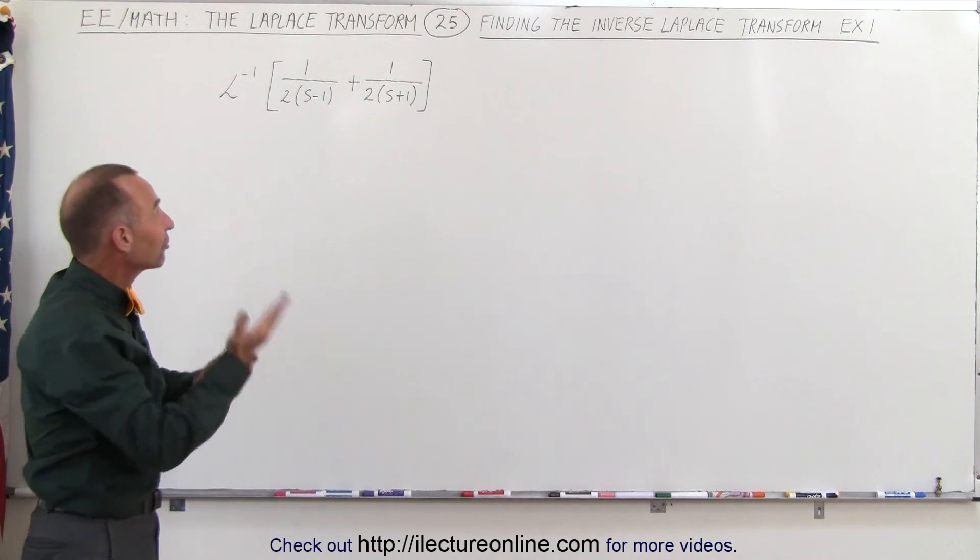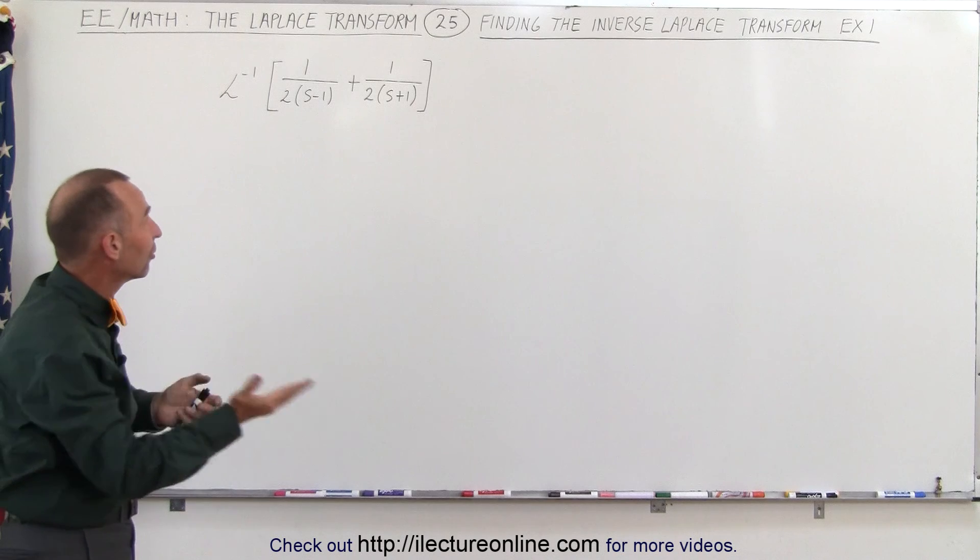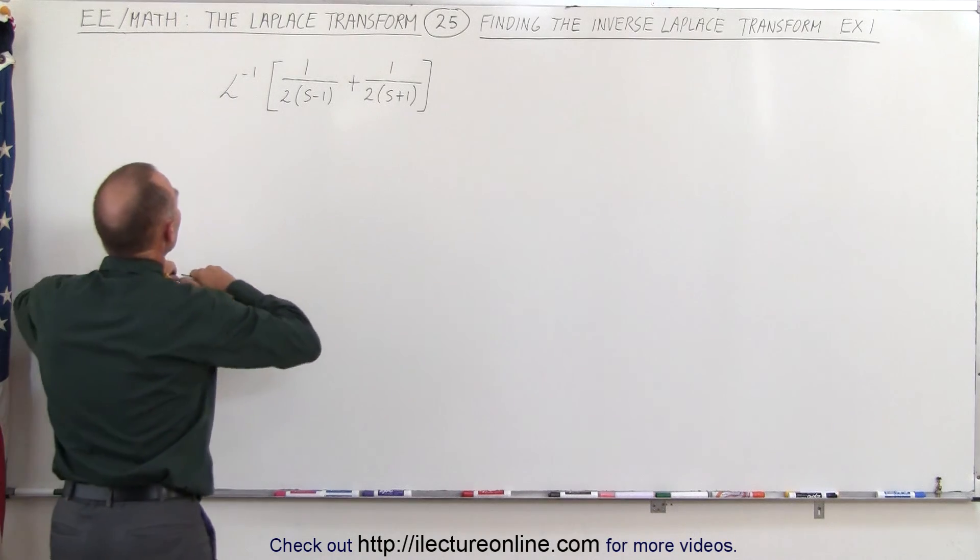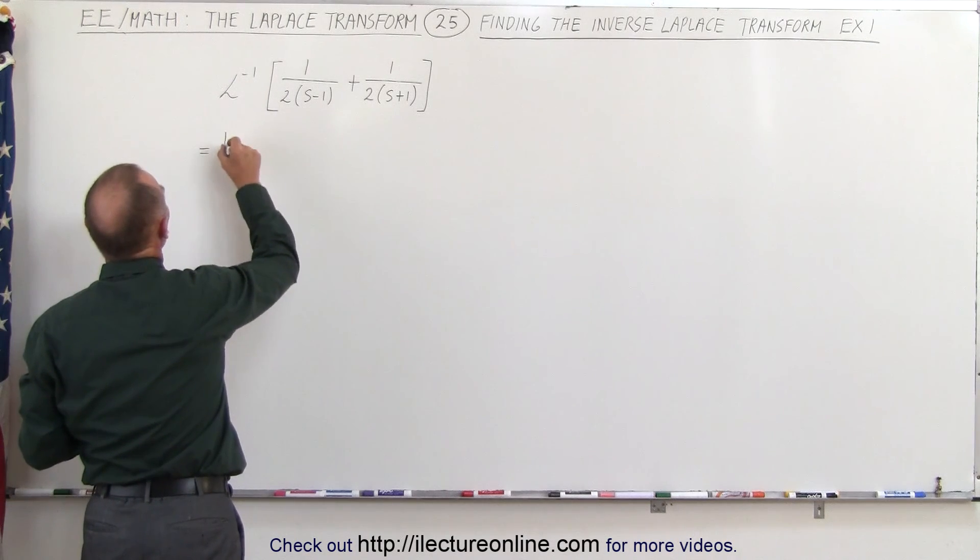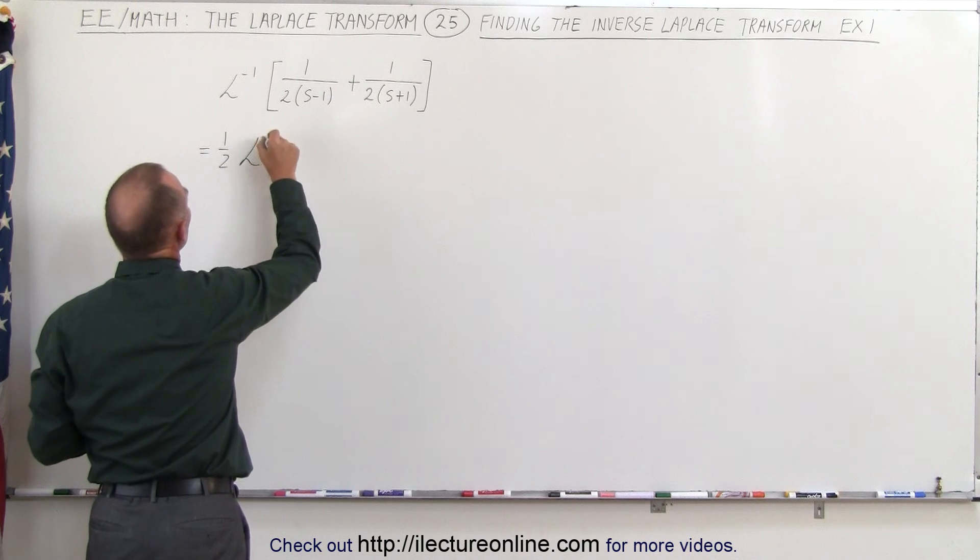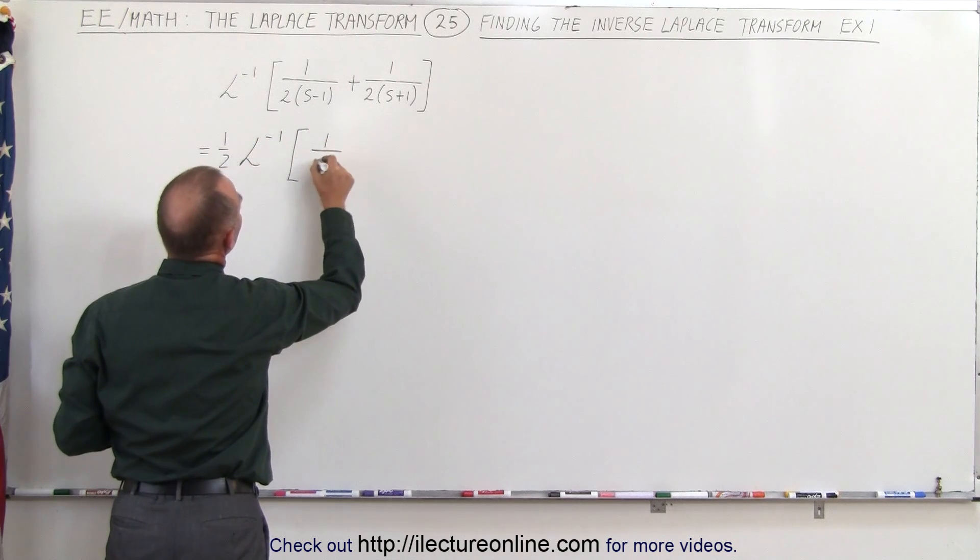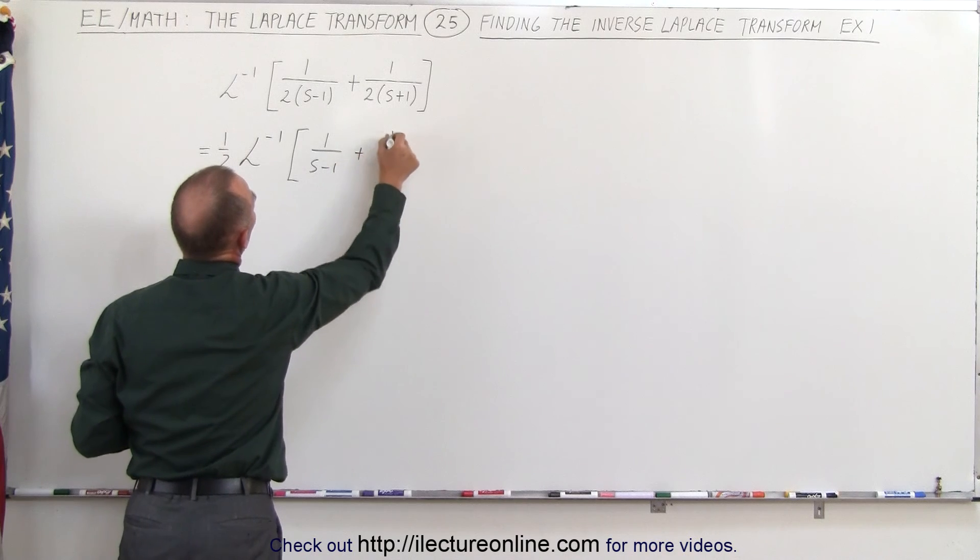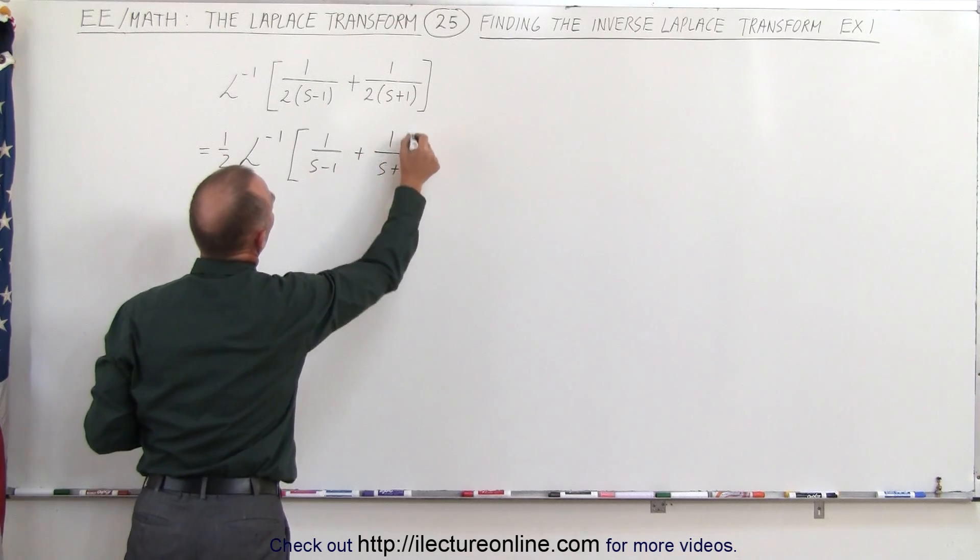We can actually factor out the 1 half. It's a constant which can come completely out. So this can be written as 1 half times the Laplace transform of 1 over s minus 1 plus 1 over s plus 1.